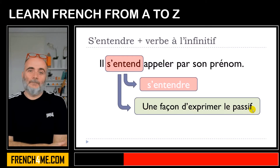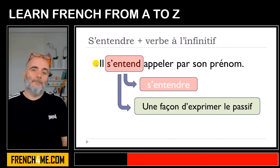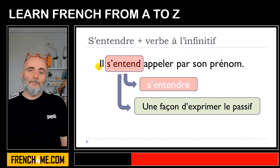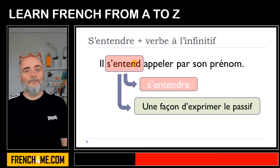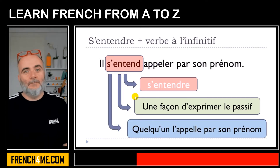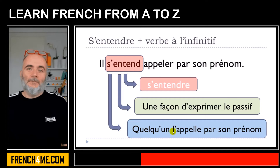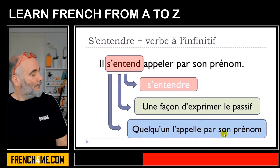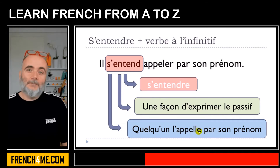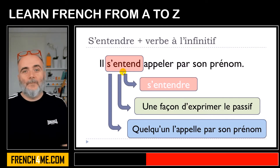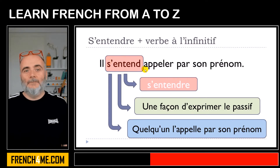The reason why is that you will use s'entendre as a way to express the passive form — une façon d'exprimer le passif. In that case, the subject doesn't do the action, so il won't be calling. To get the meaning of the sentence you could say: quelqu'un l'appelle par son prénom — somebody is calling him by his first name.